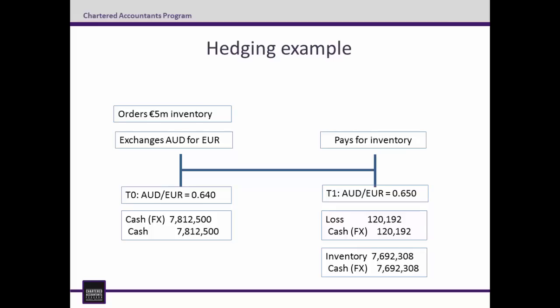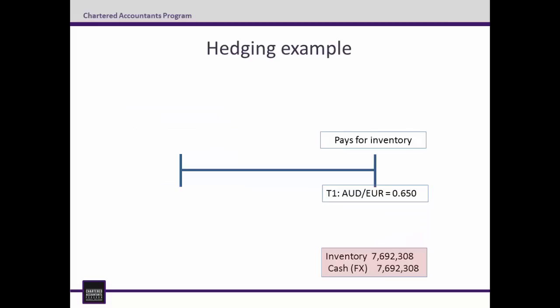So whilst the Aussie dollar actually strengthened and the inventory is recognised on the balance sheet at $7,692,308, it effectively cost the business $7,812,500. On the flip side, if EasyBits had done nothing, the only entry would have been: Debit Inventory $7,692,308, Credit Cash $7,692,308 — so the inventory would only have cost $7,692,308. In hindsight, it's easy to see that EasyBits shouldn't have hedged in this case. But as they say, hindsight is a wonderful thing. However, what hedging did was create certainty about the amount EasyBits would pay for its inventory.